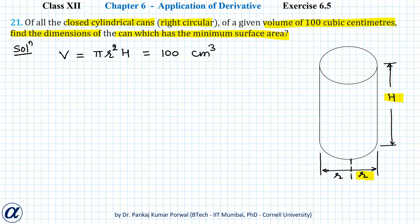The surface area of this can will be 2πrh — this is the lateral surface area — plus the area of the circular caps at the top and bottom, which will be 2πr². There are two variables r and h in the surface area, but we can eliminate one of them using the volume equation.